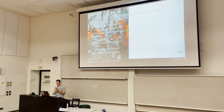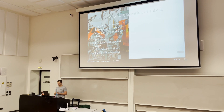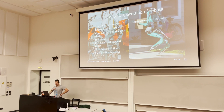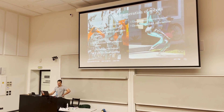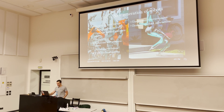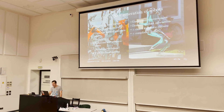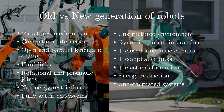For old generation robots: structured environment, contactless interaction, bulky robots with open and parallel kinematic chains, only rotational joints, no energy restrictions, and fully actuated systems. For mobile robots: unstructured environment, huge energy limitations, dynamic contact interaction required for walking and physical interaction with the environment. We need smarter mechanics — close kinematic chains, compliance, elastic deformation, and under-actuation.